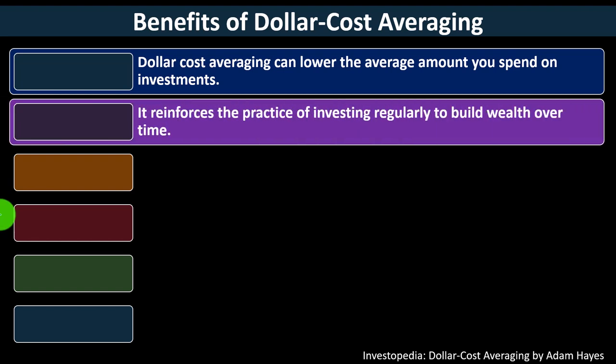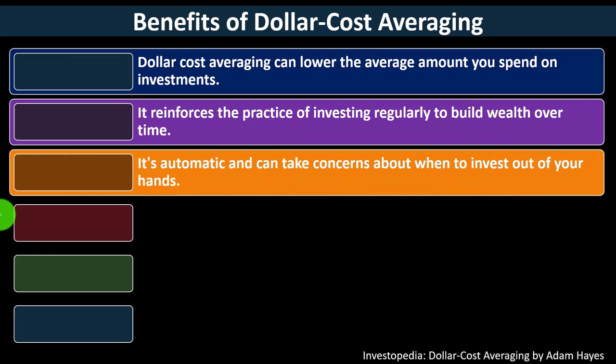Dollar cost averaging can lower the average amount you spend on investments. It reinforces the practice of investing regularly to build wealth over time — and notice that wealth over time, like saving for retirement, is a long-term habit. Individuals are better at short-term decisions than long-term ones. The way to deal with long-term things is to plan a strategy and make it as automatic as possible, so you don't have to rethink it every time you put money in. Think about it thoroughly once, then execute the strategy automatically.